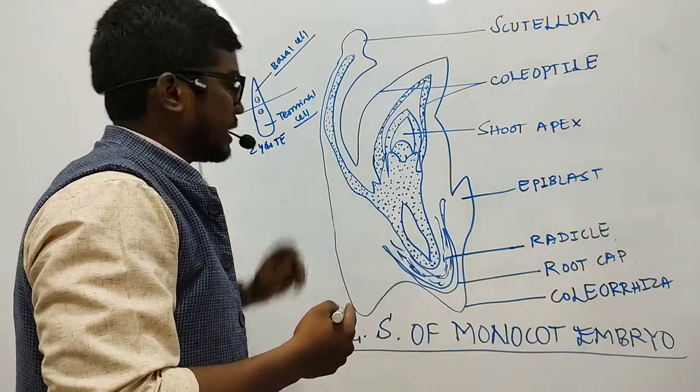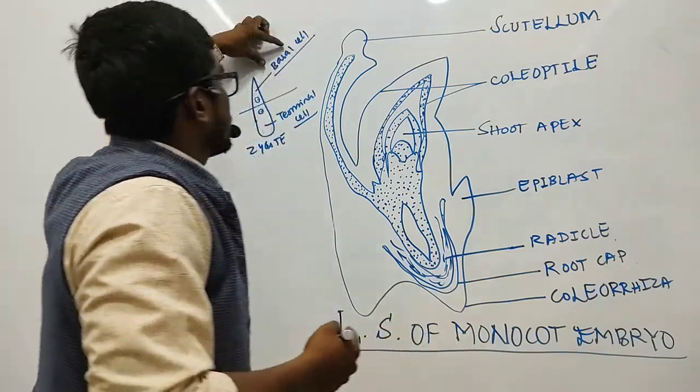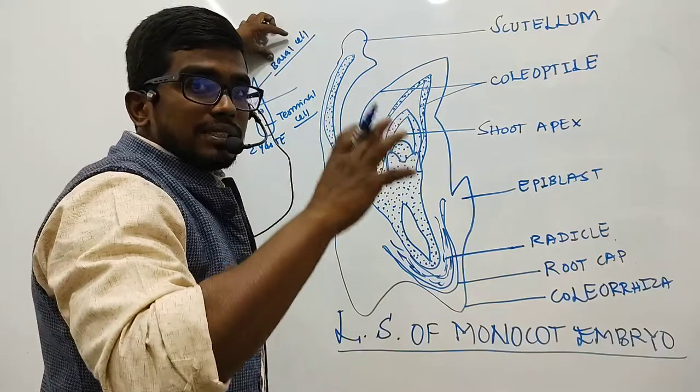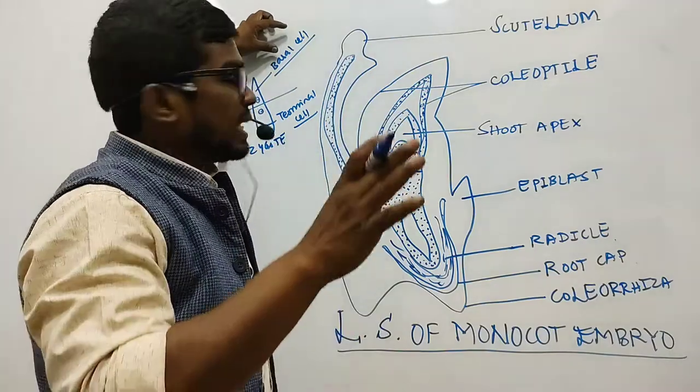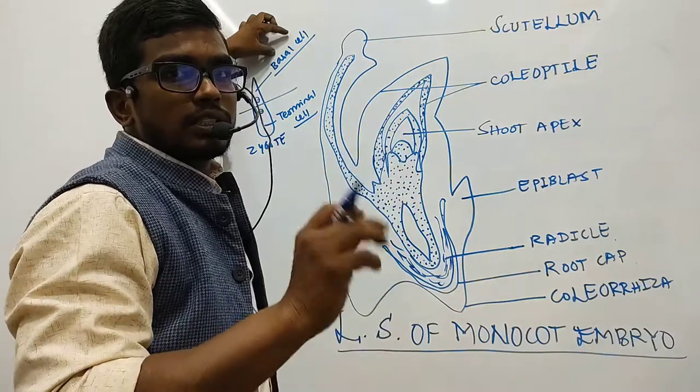Now the basal cell in case of dicot embryo forms suspensor, six to eight cells it was, but here it is just a single-celled vesicular suspensor will be formed.